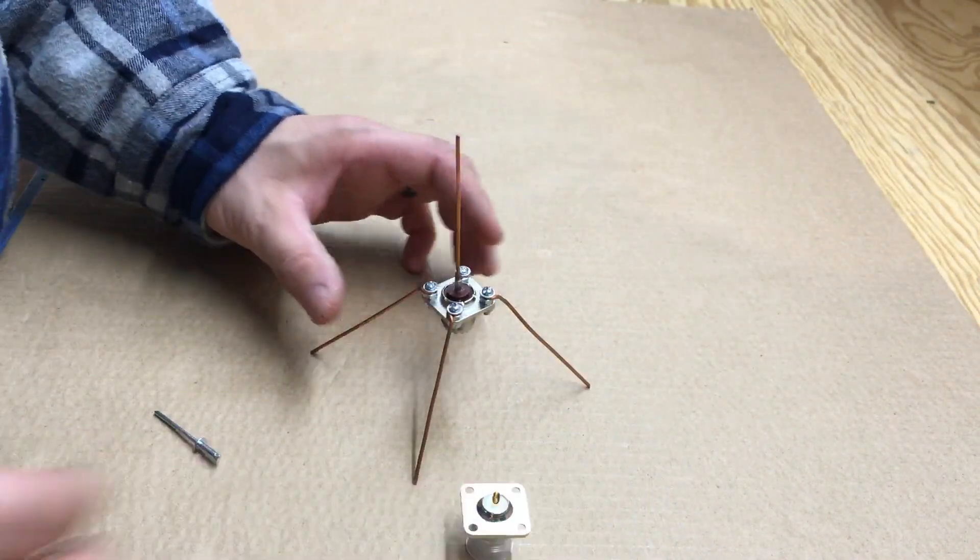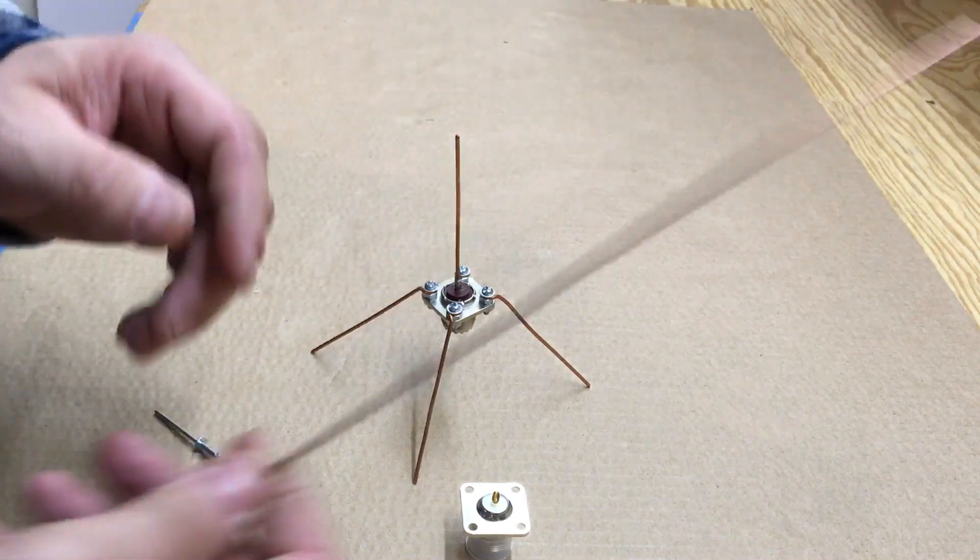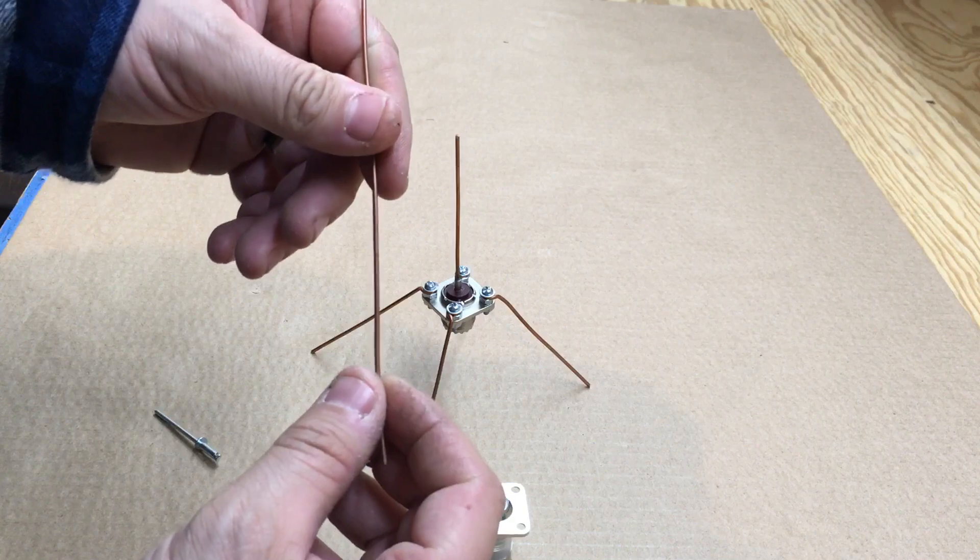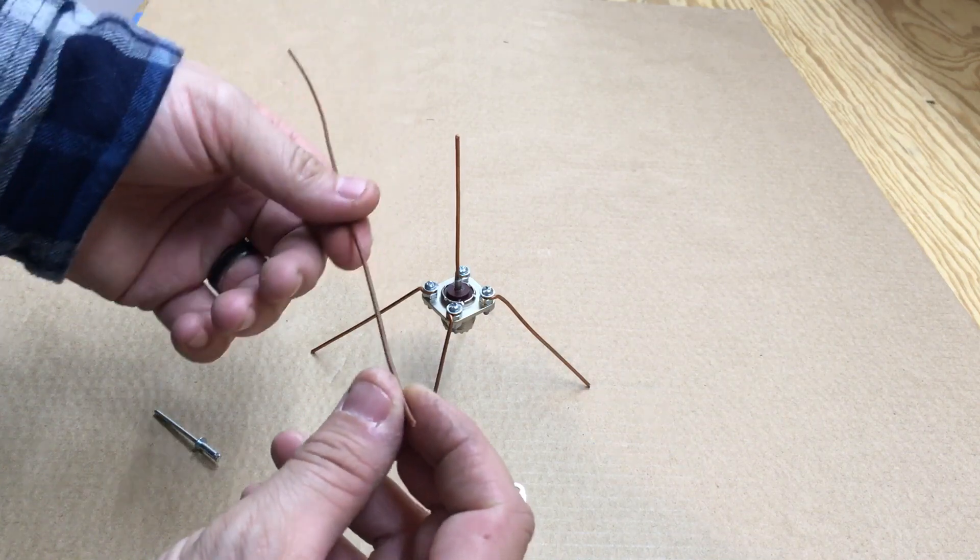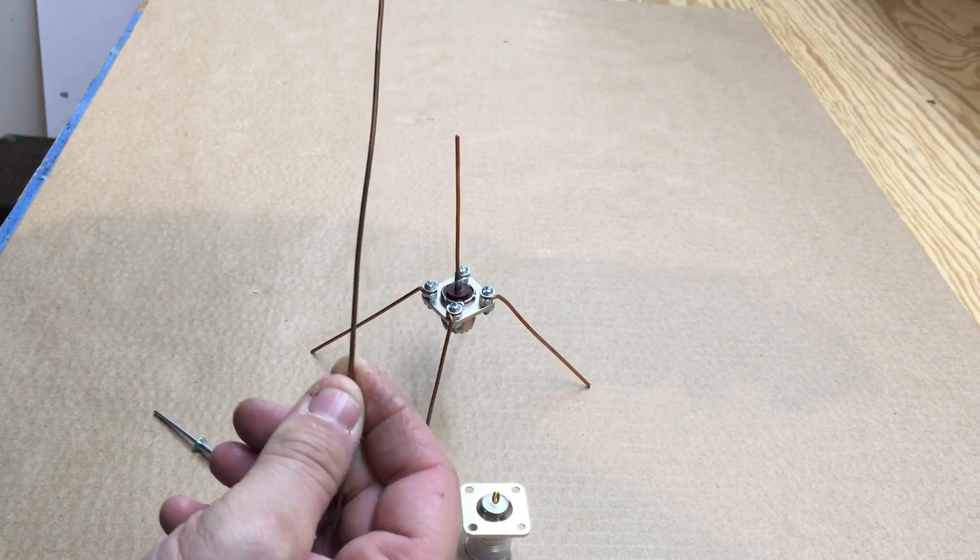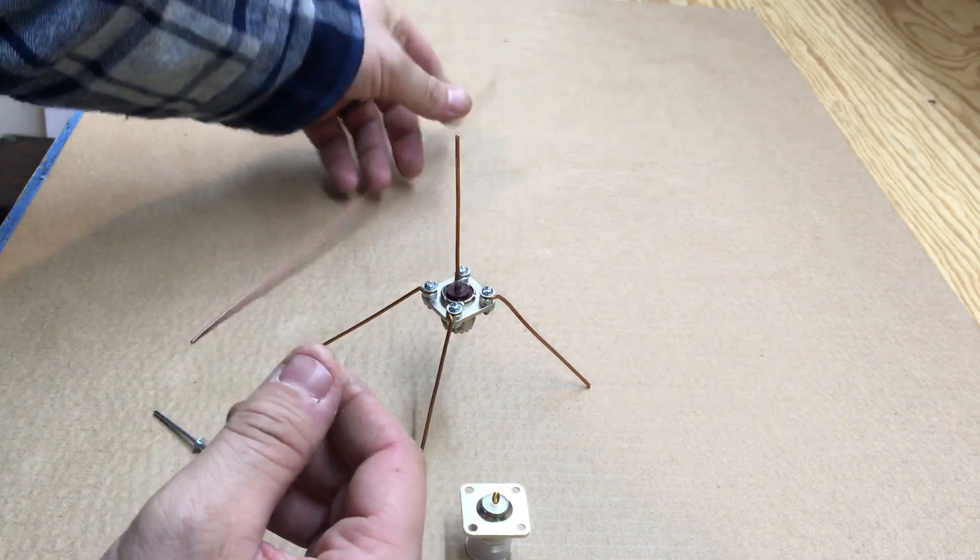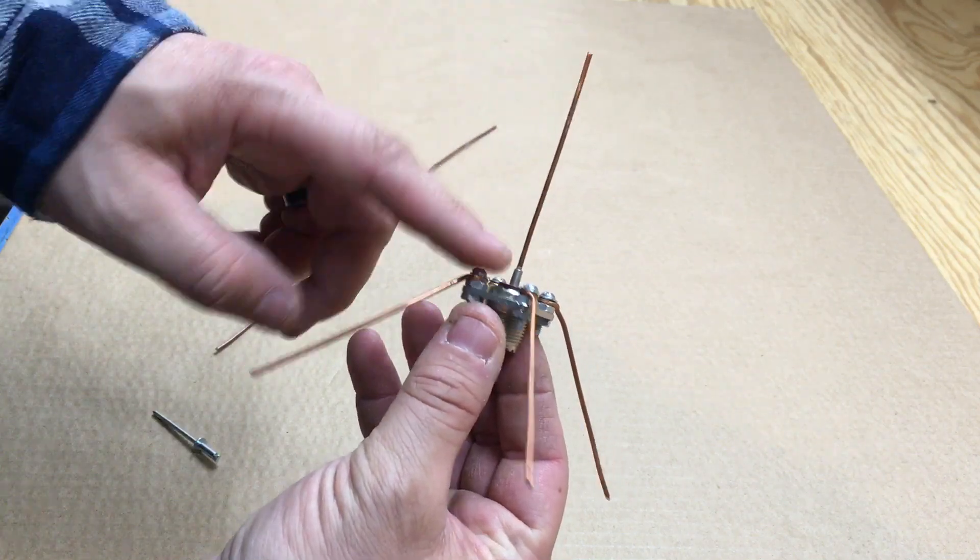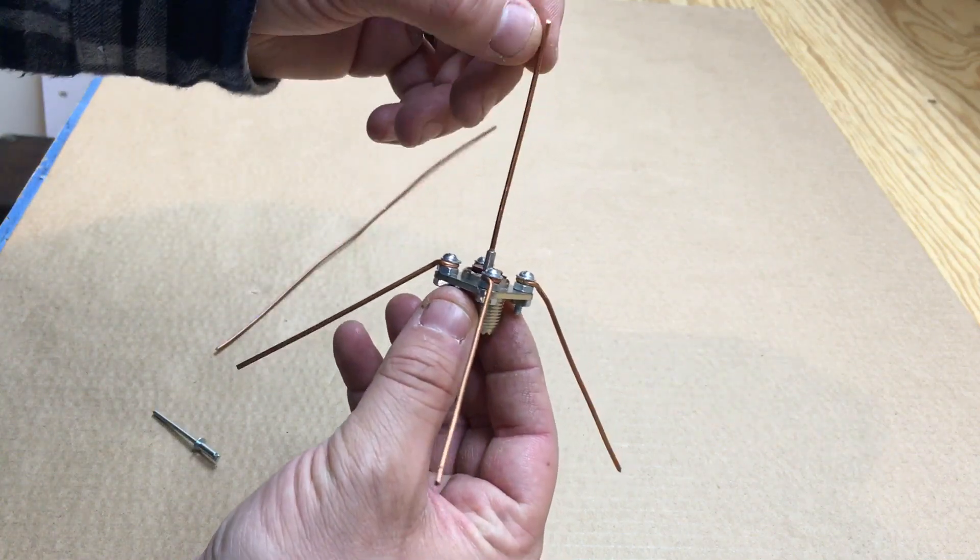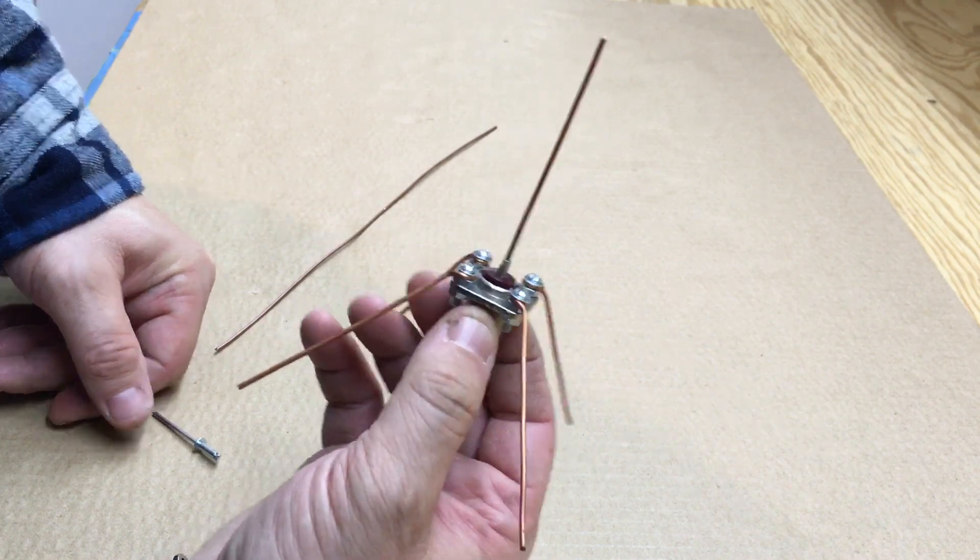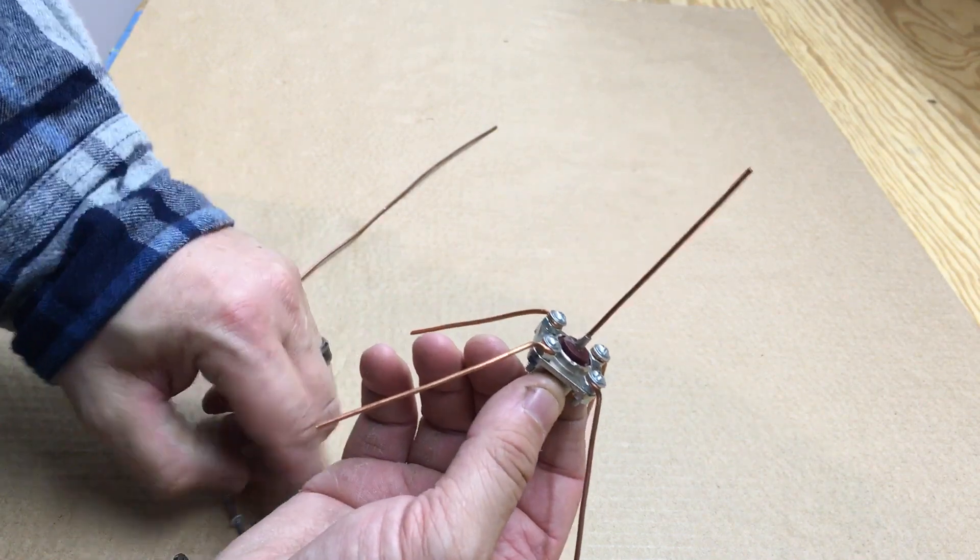I just use solid copper household wire, 12 or 14 gauge, or probably 14 or 16 gauge, works really good. Each radial and the center here needs to be 68 millimeters once done.